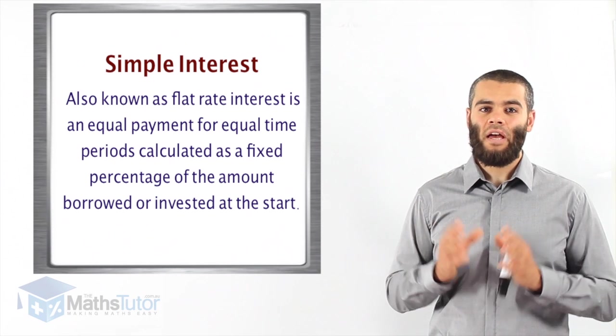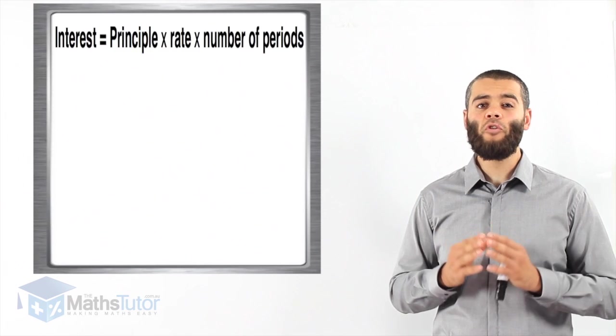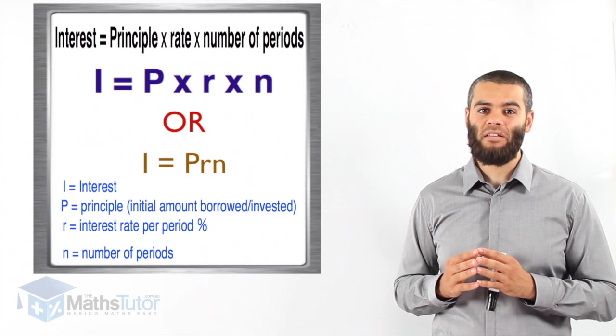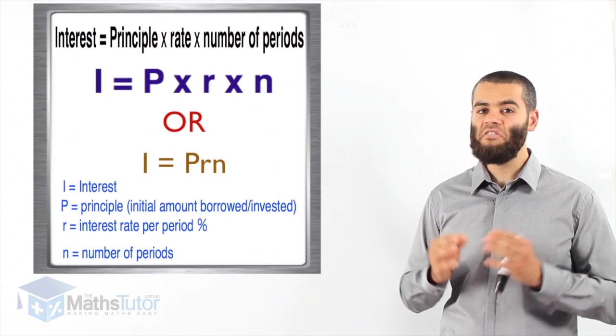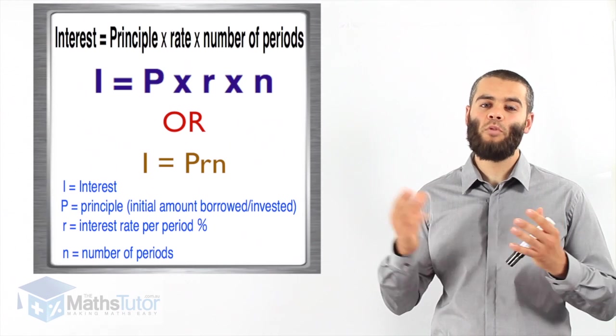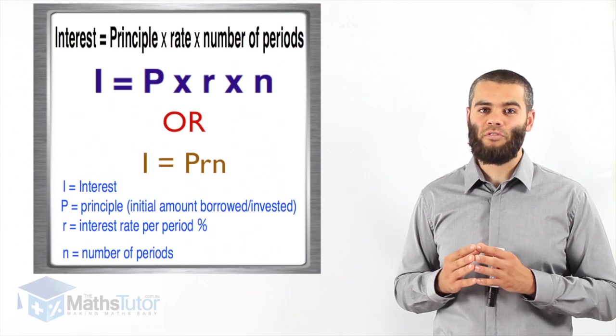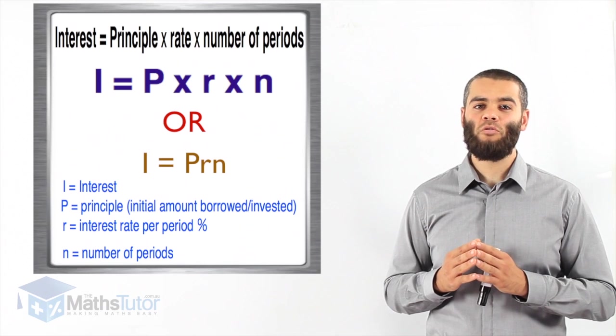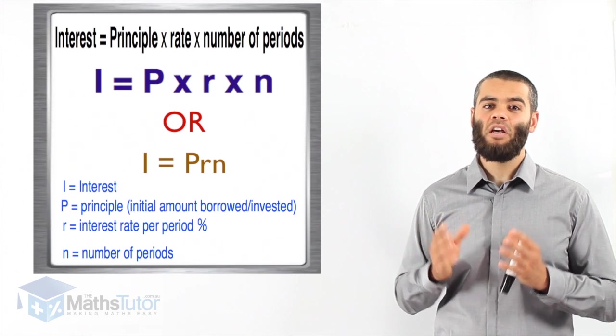So, we're going to use a special formula to understand what we meant by that. The formula is interest equals principle times rate times time, or interest equals principle times rate times the number of periods. Time or the number of periods, you may see that formula, I equals PRT or I equals PRN, they are the same formula. But for now, we're going to use I equals PRN.